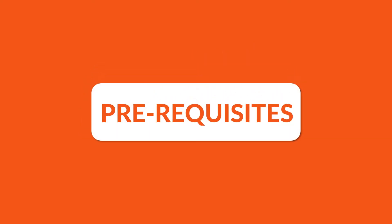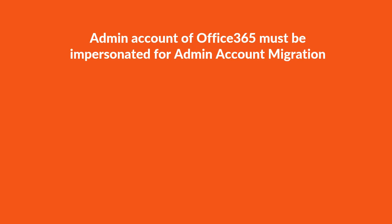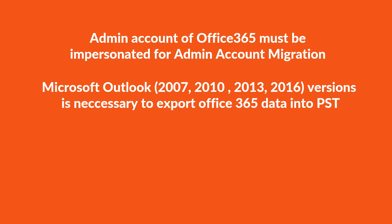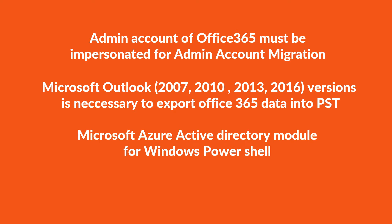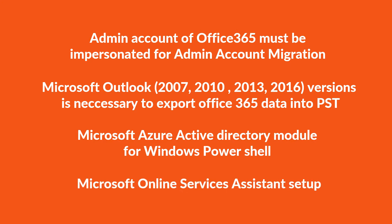Now let's check out the prerequisites before installing the software. The admin account of Office 365 must be impersonated for admin account migration. In order to export Office 365 data into PST, any of the mentioned versions of Microsoft Outlook must be installed on your system. Also, you have to install the Microsoft Azure Active Directory module for Windows PowerShell, and the Microsoft Online Services Assistant setup needs to be installed on your system for the software to work properly.